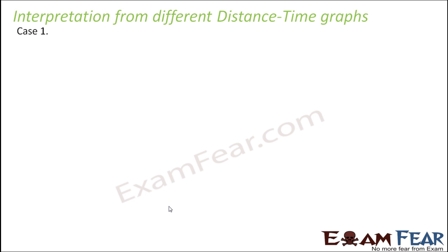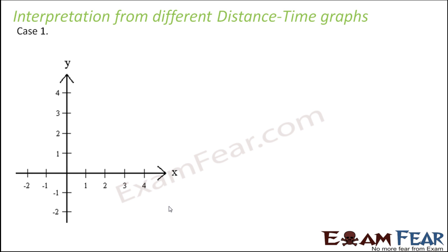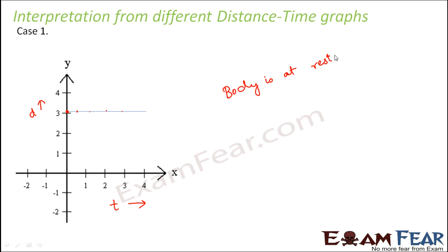Now, looking at distance-time graphs, you can interpret a lot of things. The distance is on the y-axis and time is on the x-axis. In the first graph, the line is horizontal — time is increasing but the distance covered remains the same. That means the object is not moving at all; it is located at the same position. So this graph tells us the body is at rest.